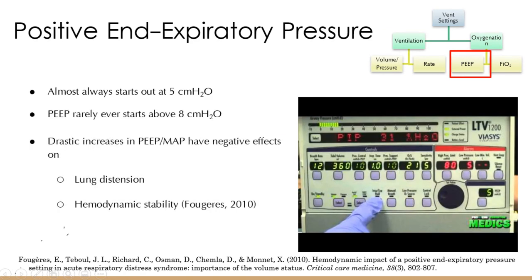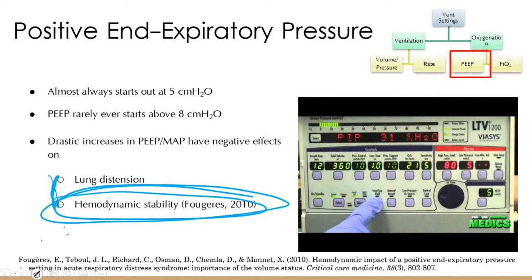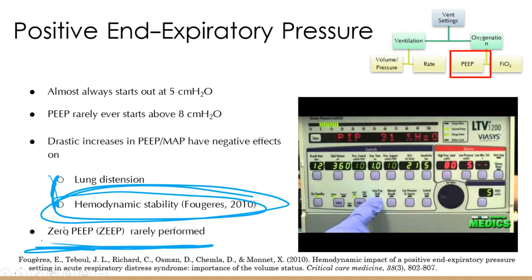PEEP usually starts at 5 and rarely starts above 8. The main downsides to high PEEP and high mean airway pressure are lung distension and — a big one you've definitely been told about — decreased venous return, which decreases cardiac output and blood pressure. Be aware when increasing PEEP that you don't drop the blood pressure too much. Zero PEEP is rarely performed; I've seen it with pneumothoraces and sometimes asthma when there's so much intrinsic auto-PEEP that adding more would worsen air trapping.